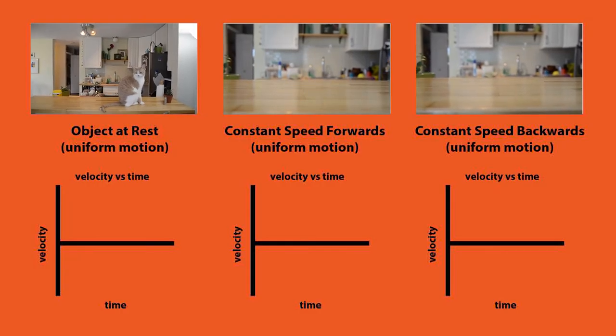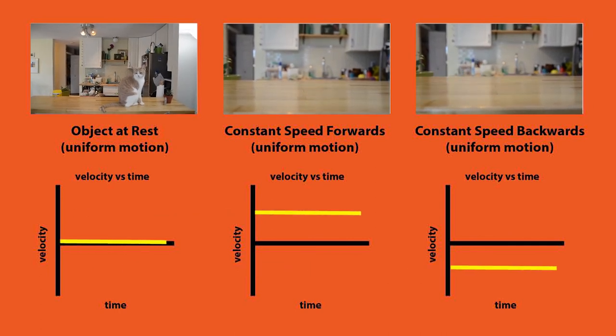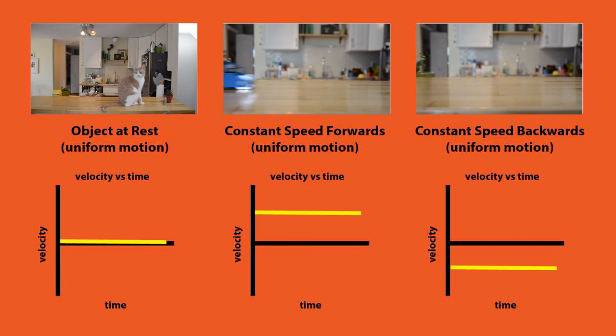What about velocity time graphs though? So here's the velocity time graph for each of those uniform motion situations. You can all see they are horizontal lines.